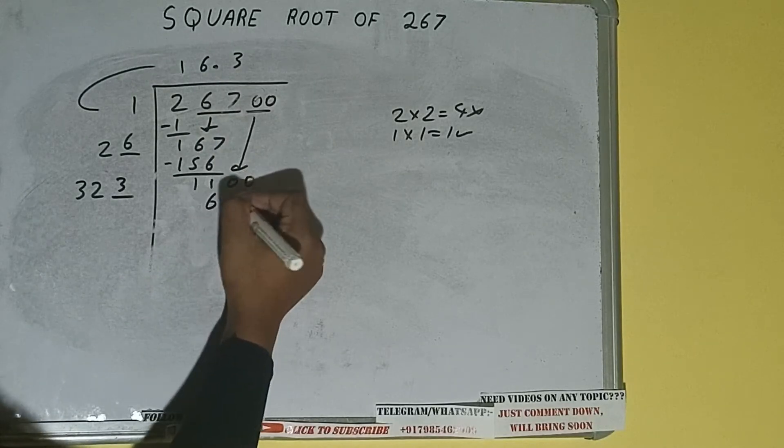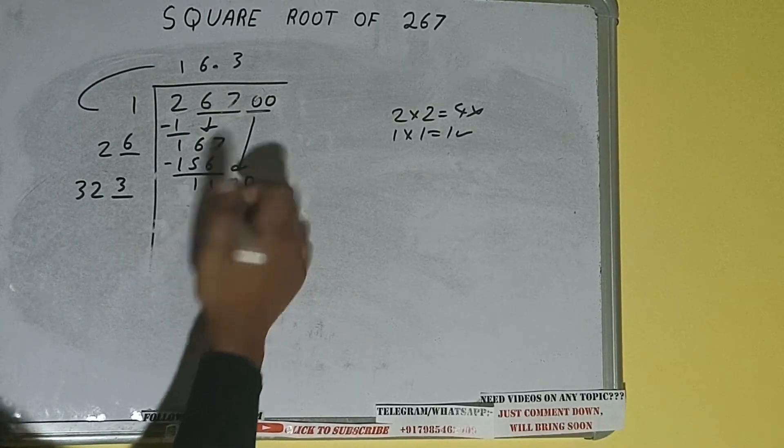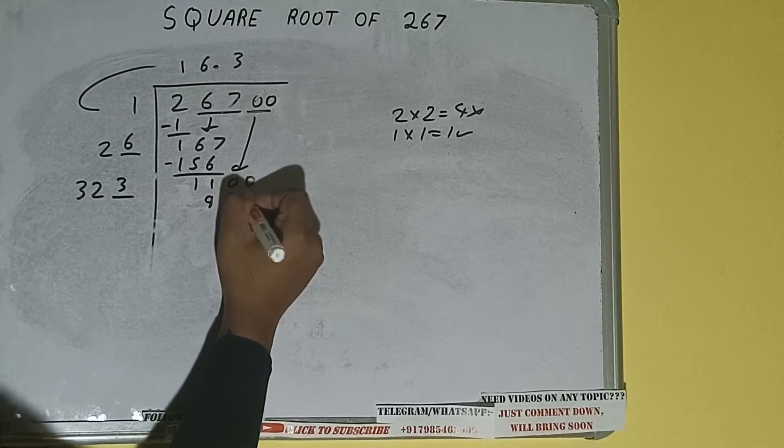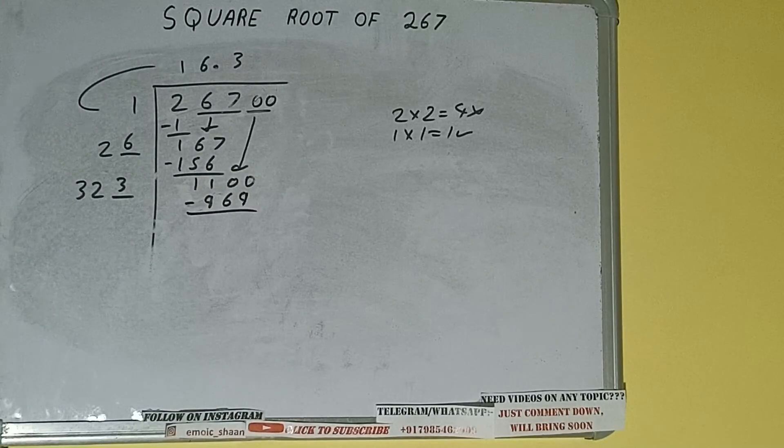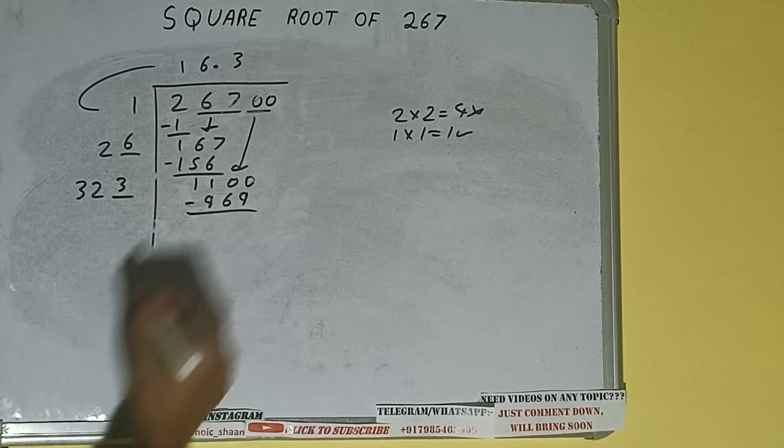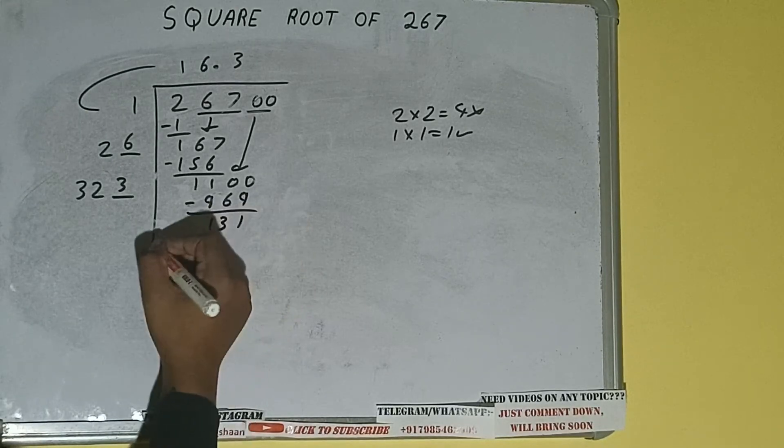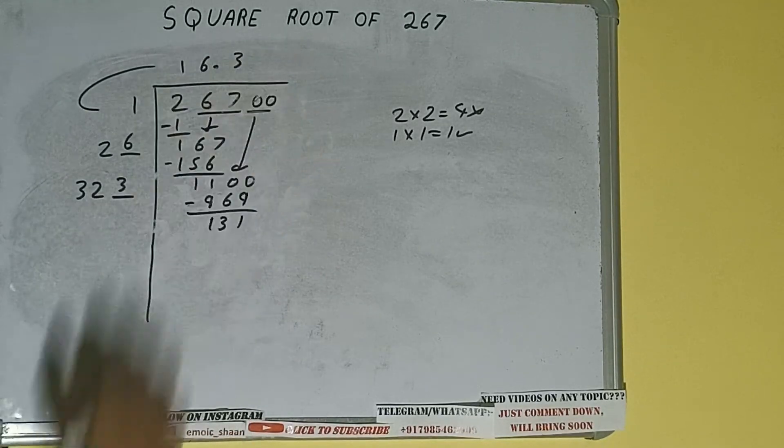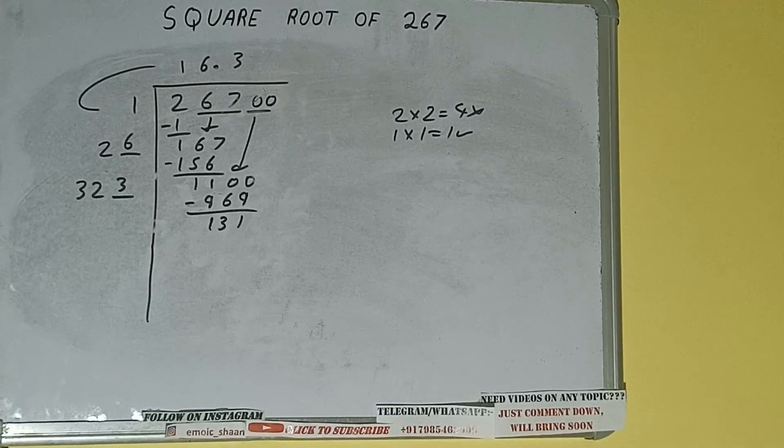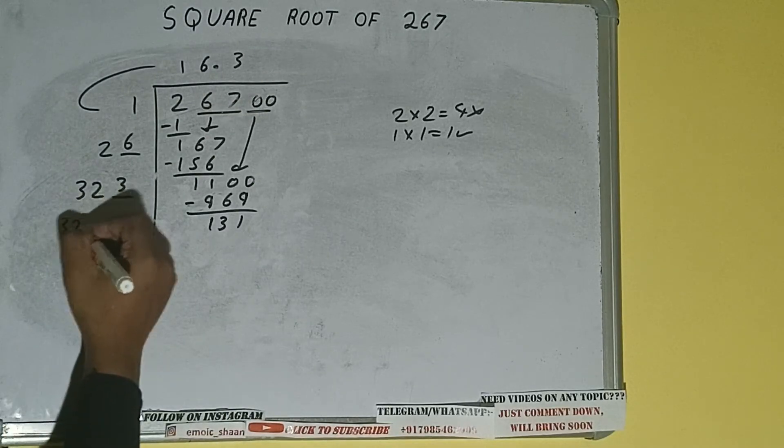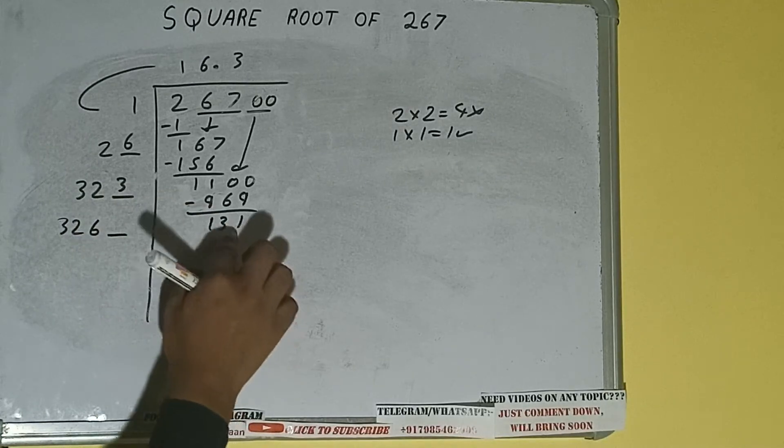Now we can write three here and three here, it will be 969. Subtract and we'll be left with 131. Now 323 into 3 we did, so add both. 323 plus 3 will be 326 and one digit extra.